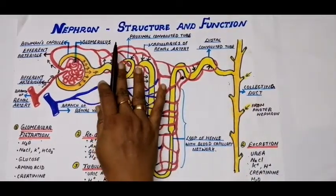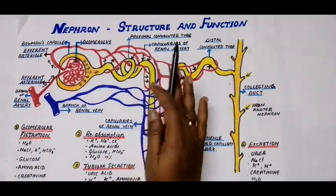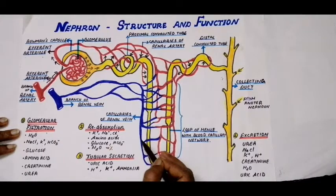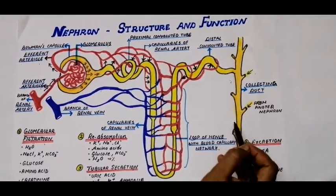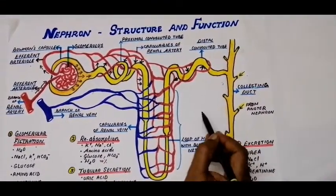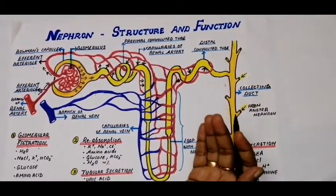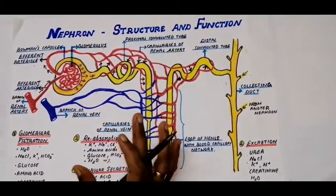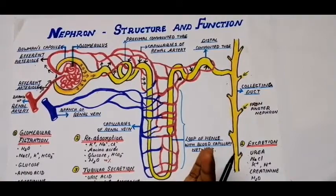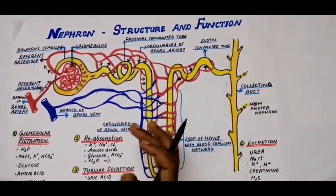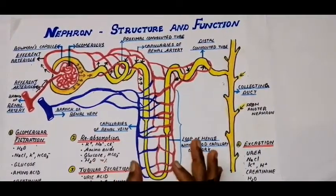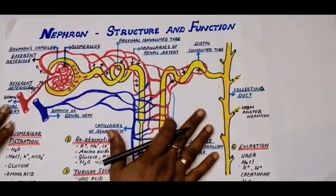Nitrogenous waste substances collected in the tubular part accumulate in the collecting duct. The blood devoid of nitrogenous waste from the capillaries is collected into the renal vein and exits the kidney. From the collecting duct, urine enters the ureters and is collected in the urinary bladder. When the bladder is full, a signal reaches the brain; the brain controls urination, the sphincter muscles relax, and urine is passed out of the body.